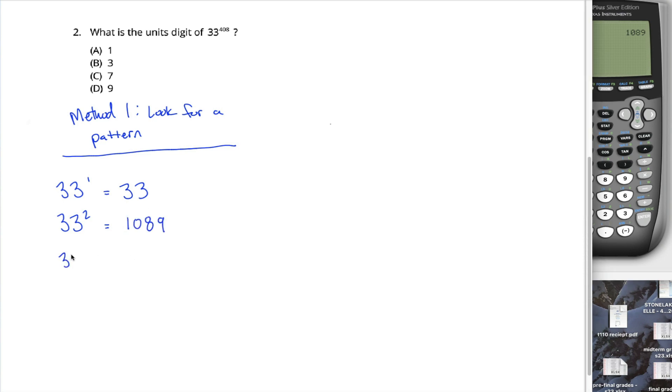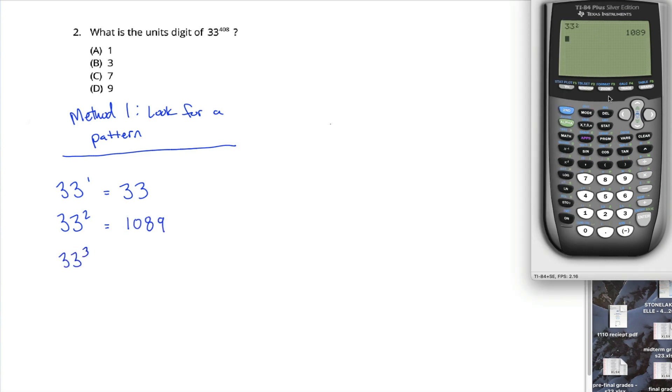What about 33 to the third power? Well, you could figure that out with your calculator or you could recognize that 33 cubed is just 33 squared times 33. So I can just hit times 33 here and get 35,937. I can continue in this fashion by just hitting enter over and over again to continually multiply my previous answer by 33.